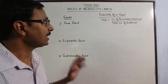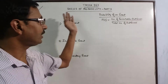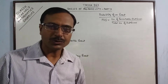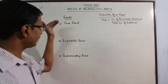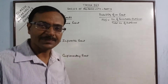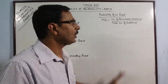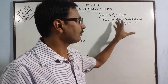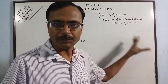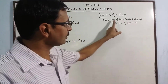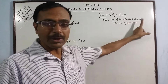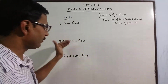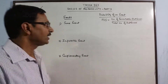Hello dear friends. In part 3 of our series of videos on basics of probability, today we are going to try to understand the types of events. We all know that the probability of an event is given by the formula: number of favorable outcomes upon total number of outcomes. So to find the number of favorable outcomes, we need to have an understanding of the type of events.